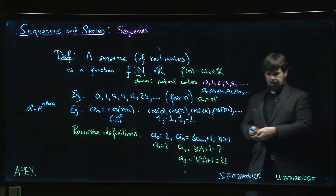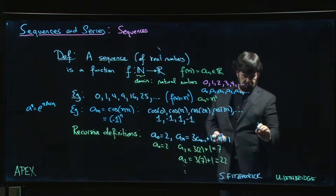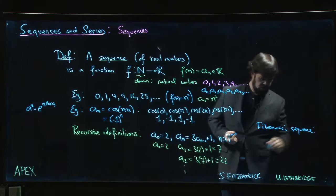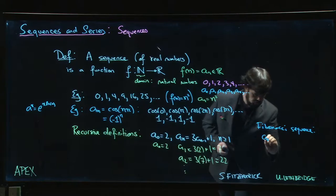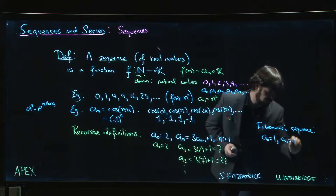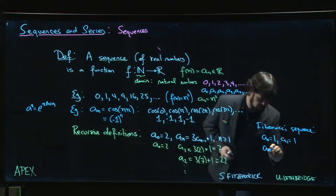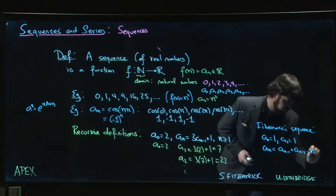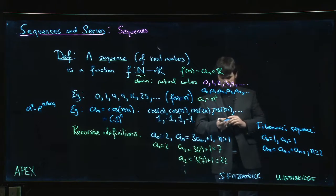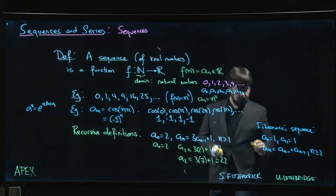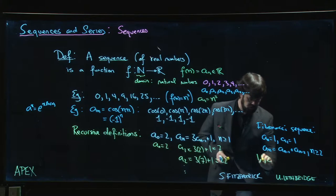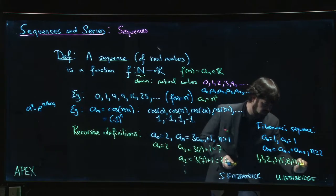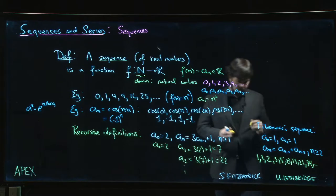A famous one that you might have seen is Fibonacci sequence. So the Fibonacci sequence actually starts with two initial terms. a_0 is 1, a_1 is 1, and a_n is just the sum of the two previous ones. a_{n-1} plus a_{n-2} for each n bigger than or equal to 2. And so you can play around and you can see what sort of terms you generate there. You get 1, 1, and then 1 plus 1 gives me 2, 1 plus 2 gives me 3, 2 plus 3 is 5, 3 plus 5 is 8, 13, 21, 34, and so on.